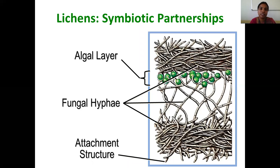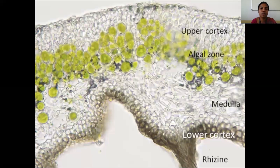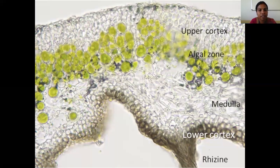This is how the lichen symbiotic partnership looks in cross-section. This is the section of the second type of lichen, fructicose lichen. Here you can see the upper cortex and lower cortex, which are made up of profusely branched fungal hyphae, and in between the medullary region where the fungal hyphae is loosely packed along with the algal partner, that is the photobiont.